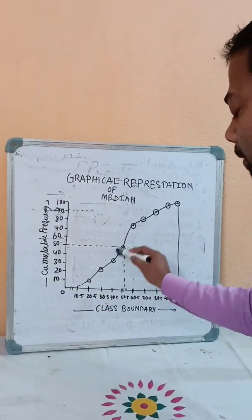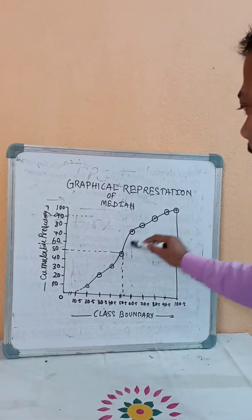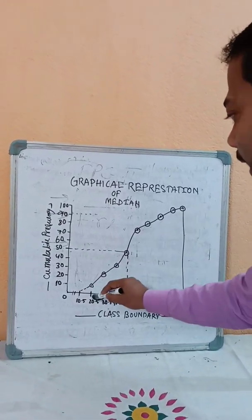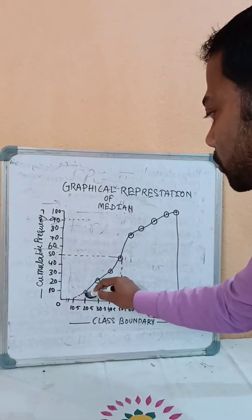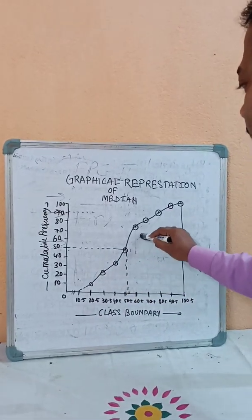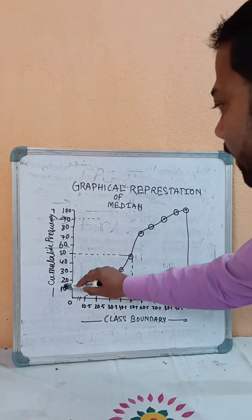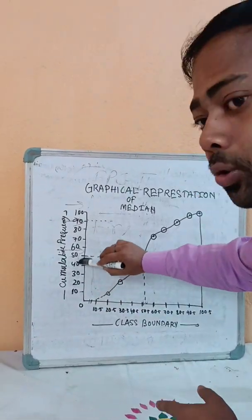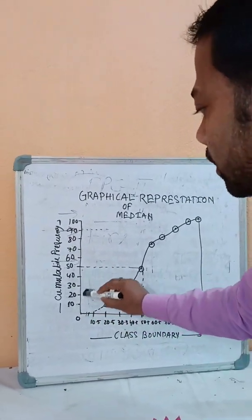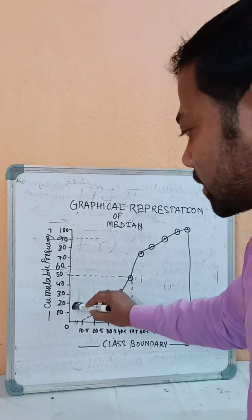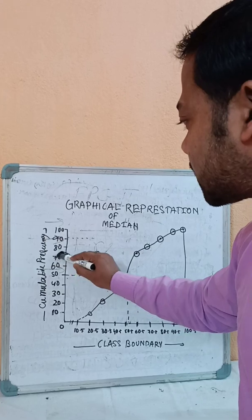The y-axis goes up in scale: 10, 20, 30, 40, 50, 60, 70, 80, 90, 100. Each unit on the y-axis represents the cumulative frequency values.